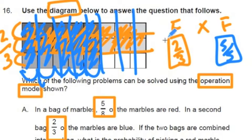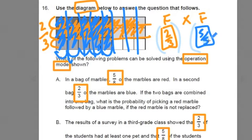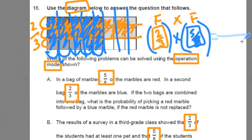If we want to find out what portion of the 2 thirds is the 5 eighths, we do this portion times this portion, or this fraction times this fraction, and we would get an answer. Now, how do you multiply fractions again?